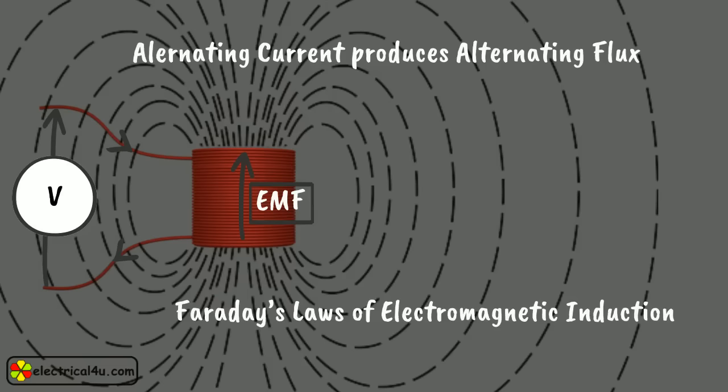The supplied alternating voltage causes alternating current in the winding, which produces continually varying flux inside and outside the winding. This continually varying flux produces an induced EMF across the winding. So we can say that the supply voltage is the cause, and the induced voltage at the winding is the effect of this cause. Hence, according to Lenz's law, this induced voltage will be in opposite polarity to the supply voltage.